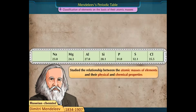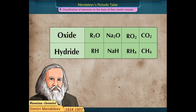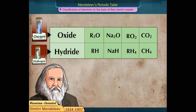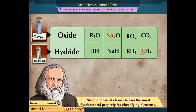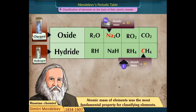Mendeleev studied the relationship between the atomic masses of elements and their physical and chemical properties. He concentrated on the compounds formed by the elements with oxygen and hydrogen, as they were very reactive and formed compounds with most of the elements. He analyzed these compounds and came to the conclusion that atomic mass was the most fundamental property for classifying elements.